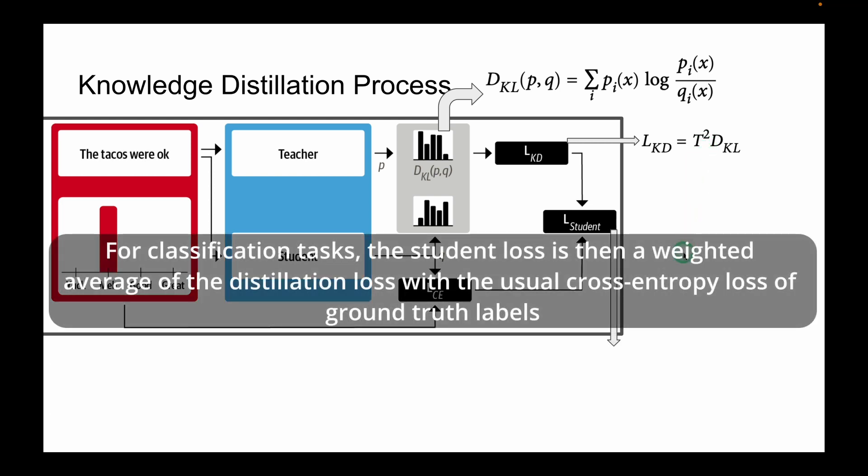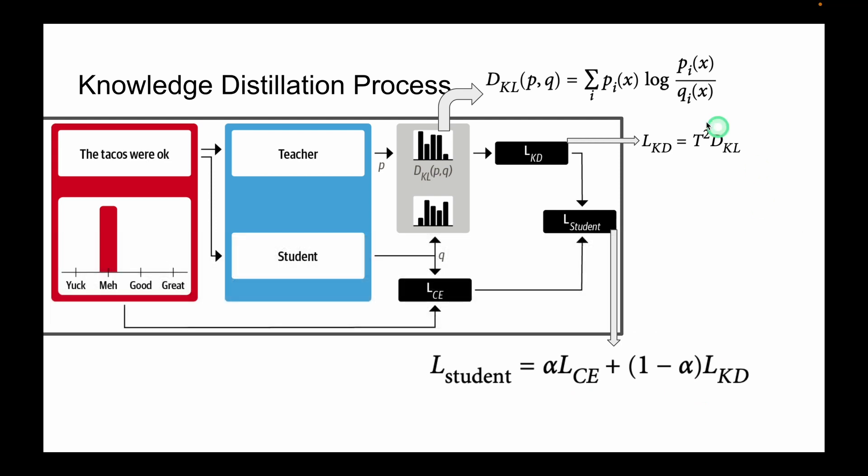For classification tasks, the student loss is then a weighted average of the distillation loss with the usual cross entropy of ground truth labels. So these three are the important equations which are used in Knowledge Distillation process.